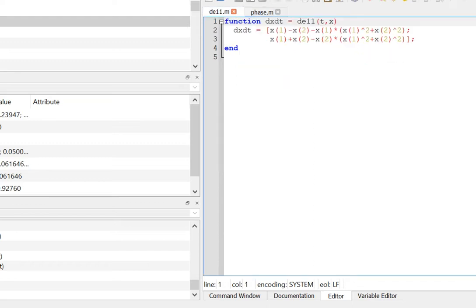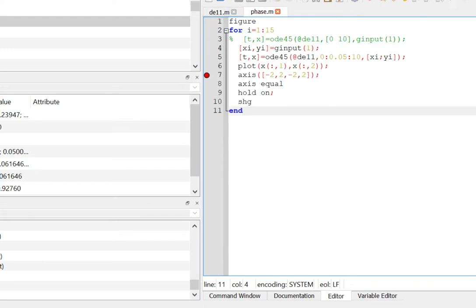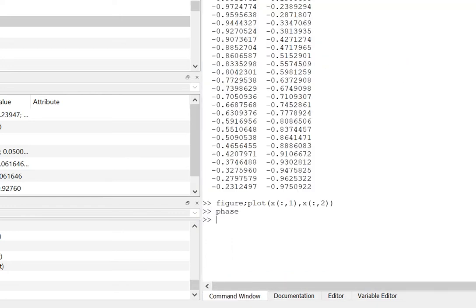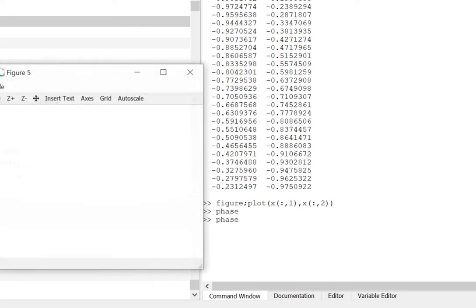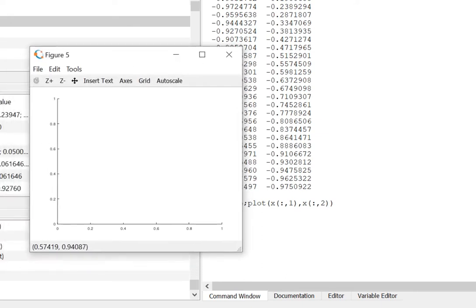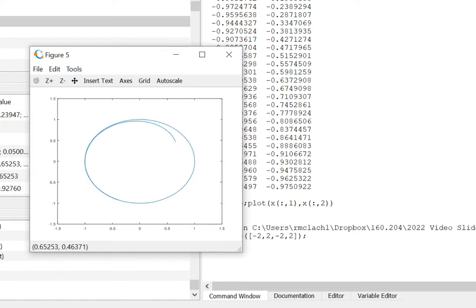So let's run this file phase, it's called phase dot m. And I click for where I want my initial condition. And it draws the solution. So it started here, spirals in towards the periodic solution.